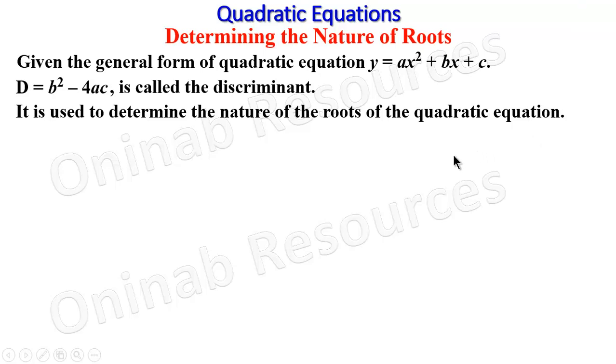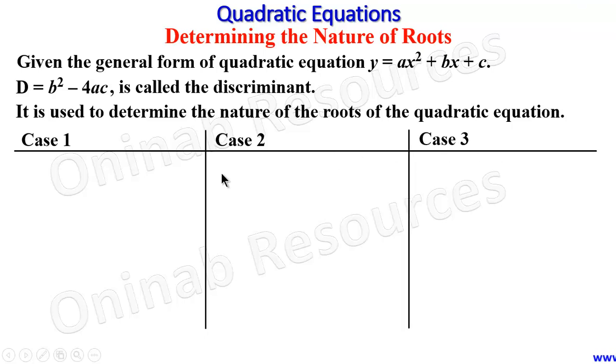In this process, we have three cases: case 1, case 2, and case 3. For case 1, if b² - 4ac = 0, the roots are real and equal.